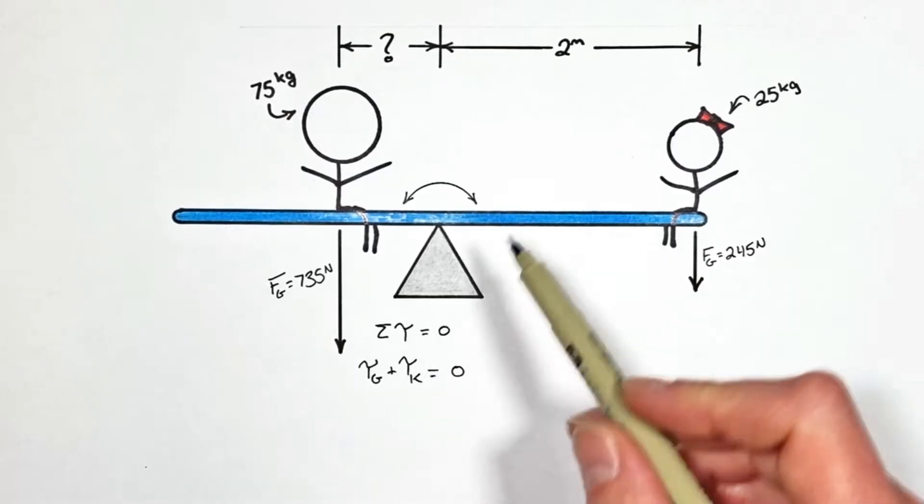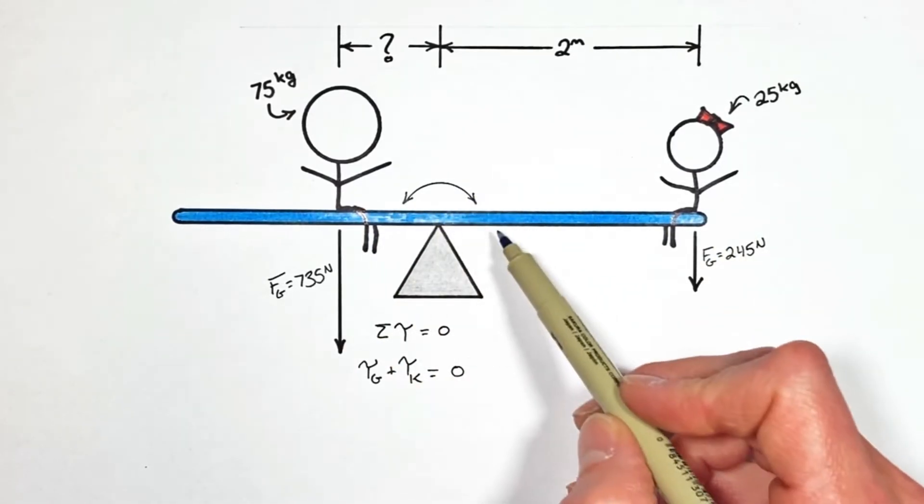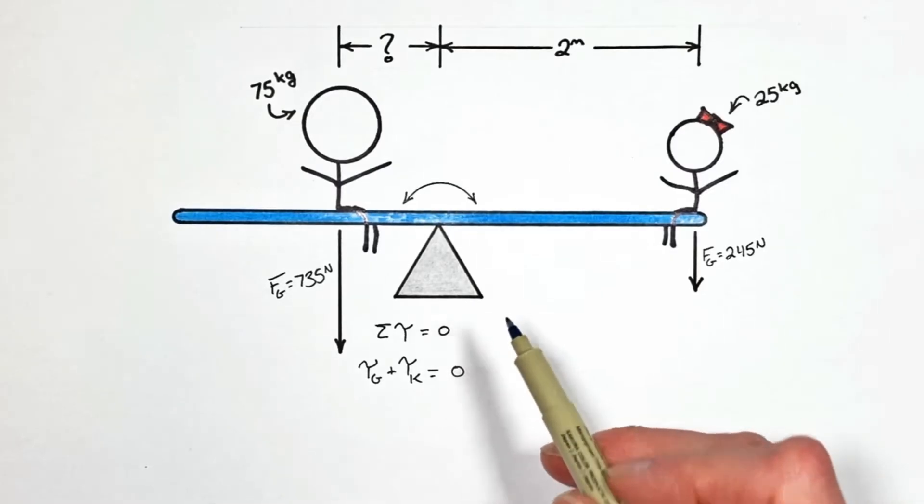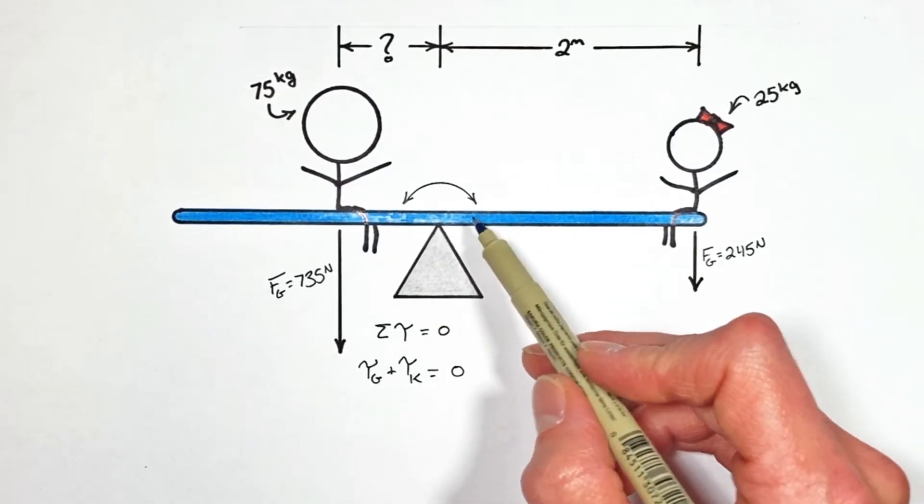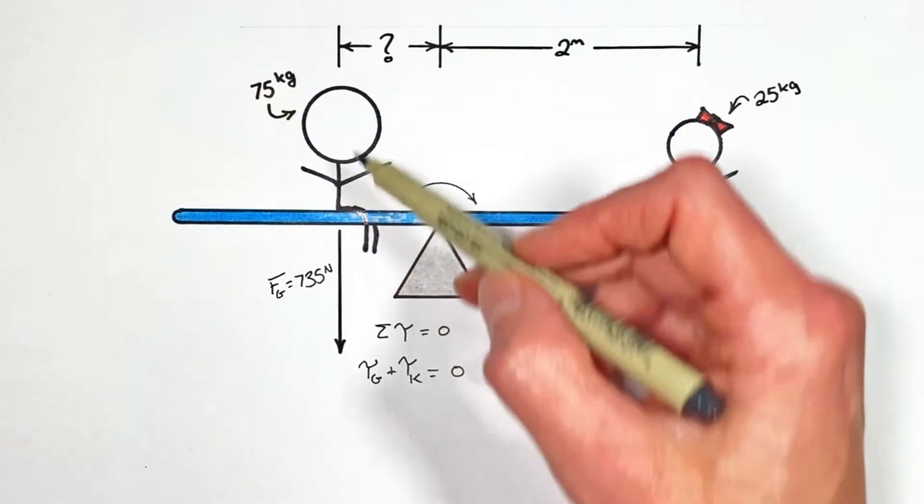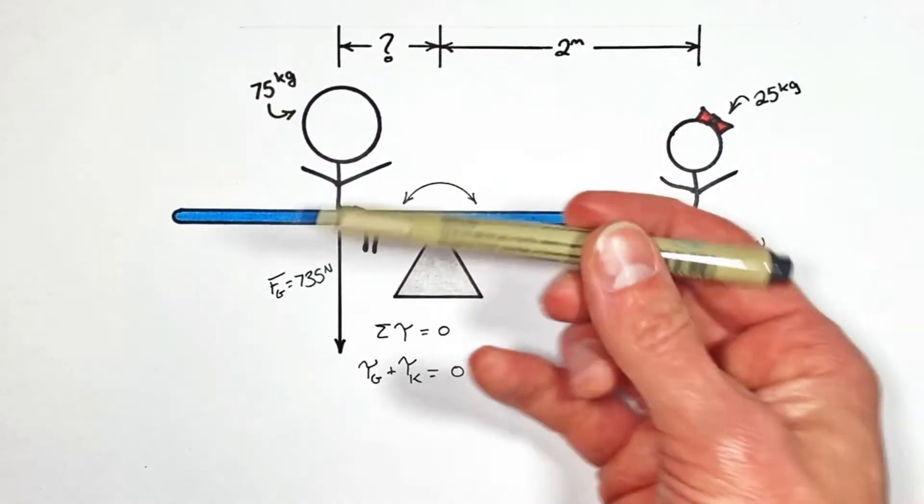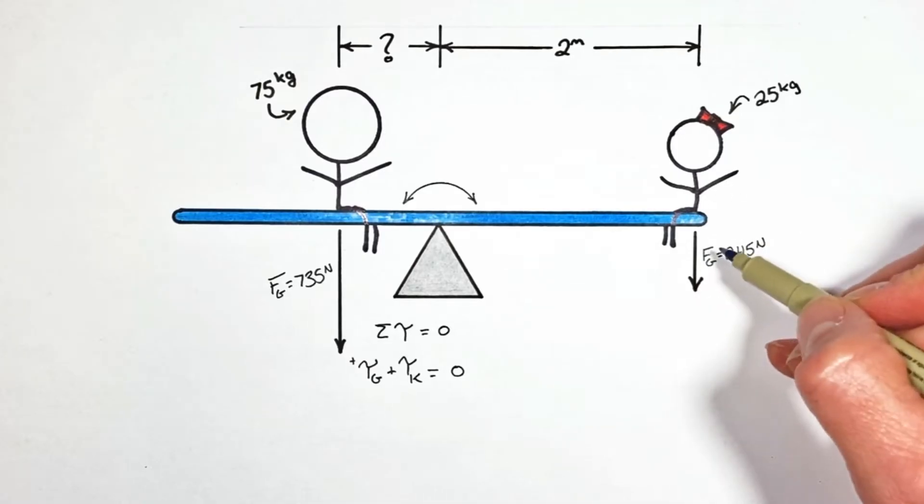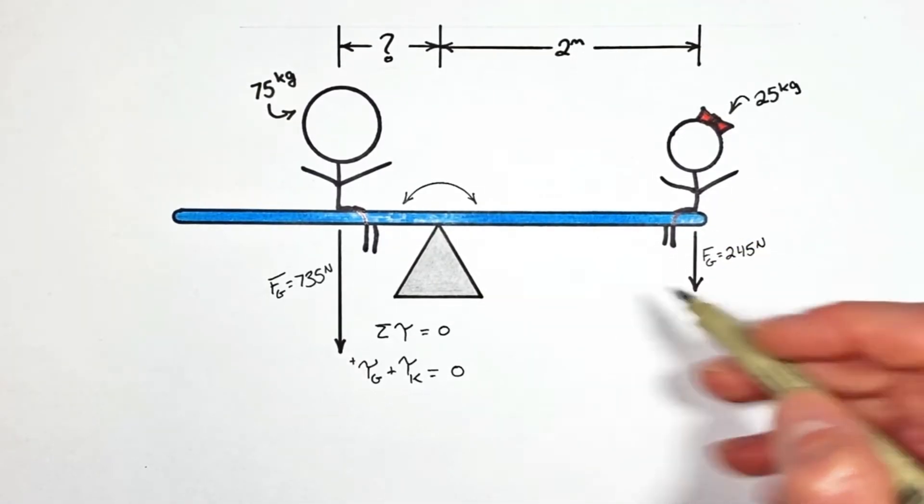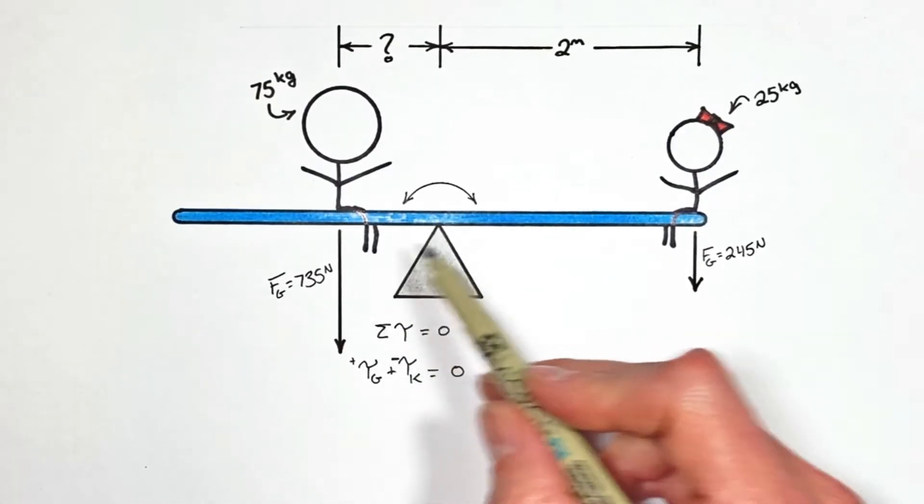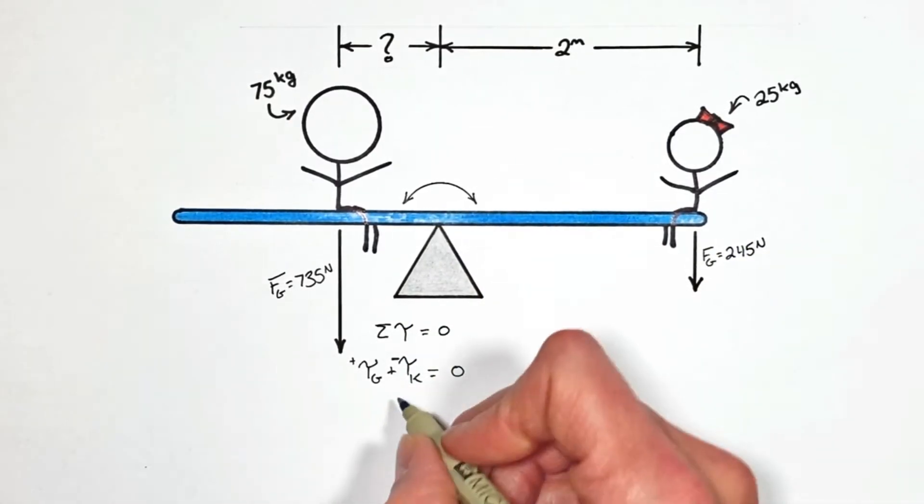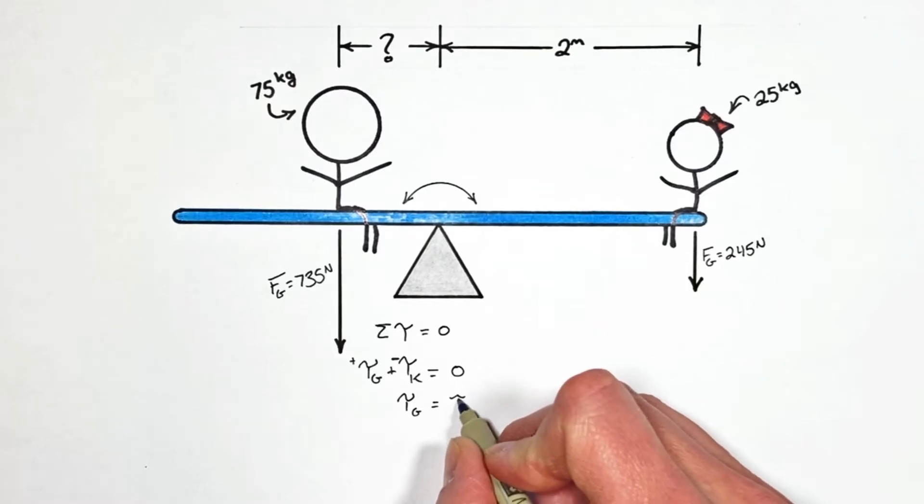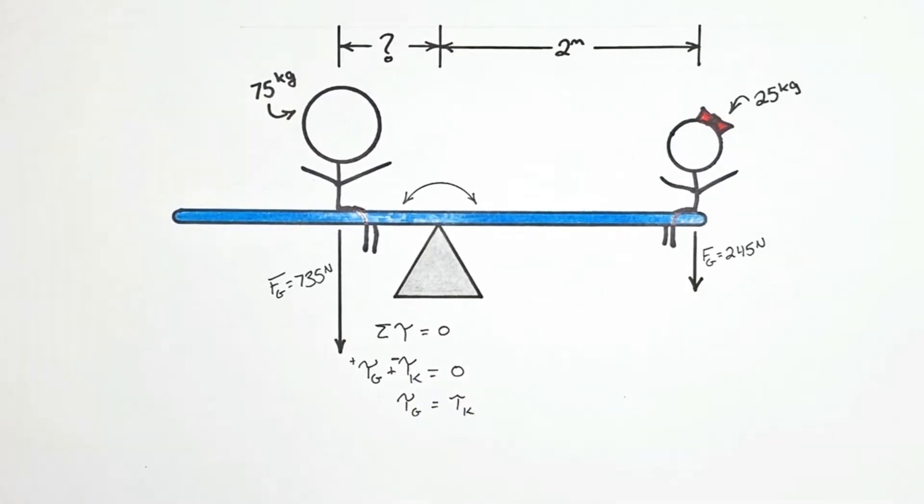Now, one important thing to realize is that since these torques are in opposite directions, one clockwise, one counterclockwise, that means one of these torques is in the negative direction. Now, the convention in physics typically is that we'll say counterclockwise is positive, meaning the torque from this heavy person or this grown-up right here trying to make the whole beam rotate counterclockwise, that's a positive torque. But the torque from this kid sitting over here trying to make the beam rotate clockwise is going to be in the negative direction. Now, which way we choose to call positive really isn't all that important, because in the very next step we're going to say the torque from the grown-up is equal in magnitude to the torque from the kid. All we did was just move this over to the other side of the equal sign.